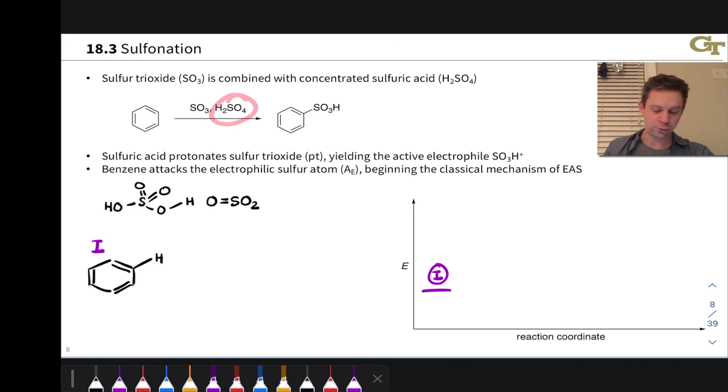Now briefly, before we get into the mechanism, let's talk about byproducts here for a second. H2SO4 comes in an aqueous solution, a solution in water, and so water will be around to act as the base that soaks up that H+ that's lost from the carbon that forms the carbon-sulfur bond in this reaction.